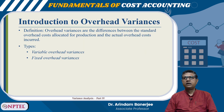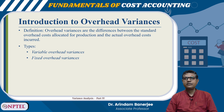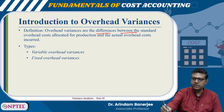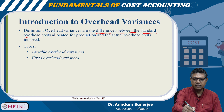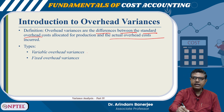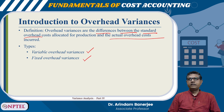Overhead variances are the differences between the standard overhead costs allocated for production and the actual overhead costs incurred. Just like material cost variance and labour cost variance, here also it is the difference between the standard overhead cost and the actual overhead cost. There are two types: one is variable overhead variances and the second is fixed overhead variances.